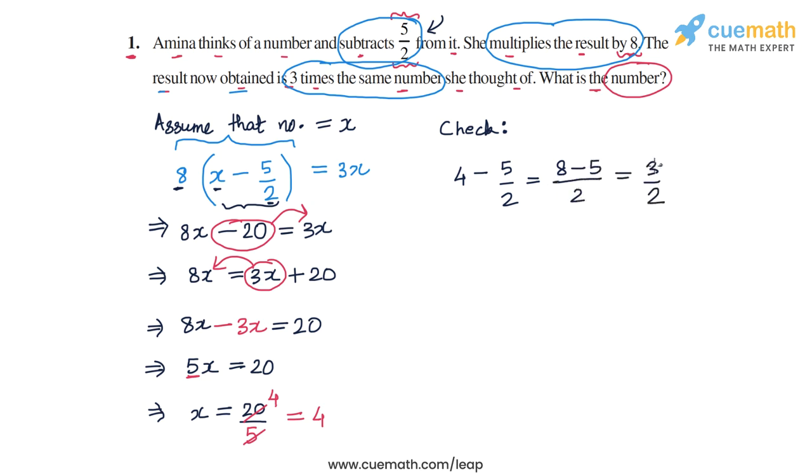So first, Amina gets 3 by 2, then she multiplies the result by 8. So 3 by 2 times 8, which is 8 by 2 is 4, so 3 into 4 is 12. So then she gets 12. And now we are told the result obtained is 3 times the same number she thought of. So she gets 12, which is 3 times the original number, which is 4.